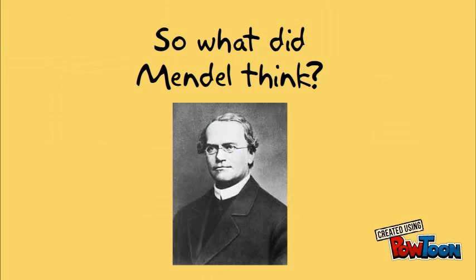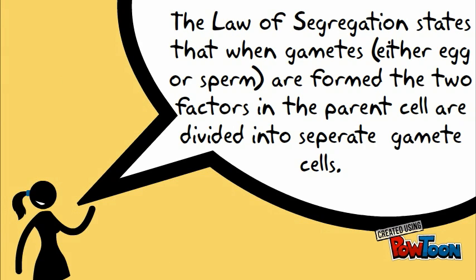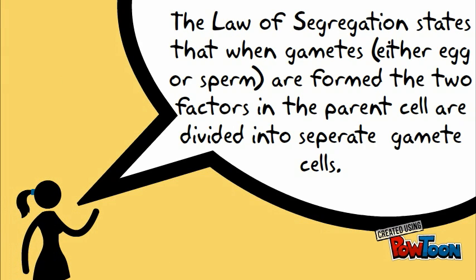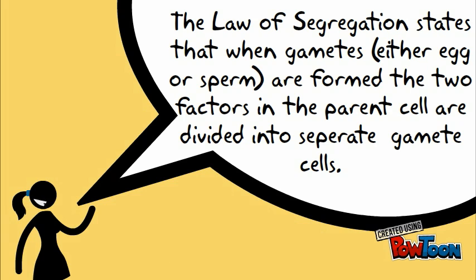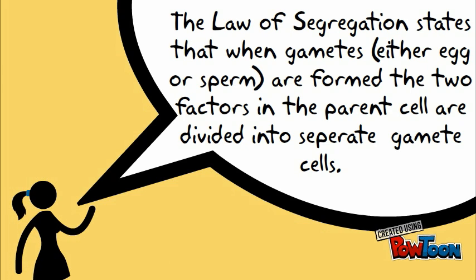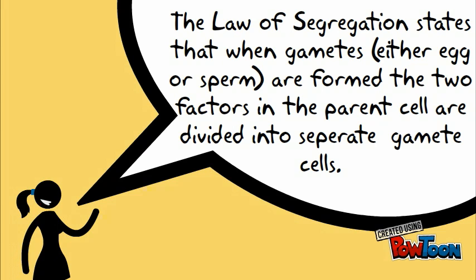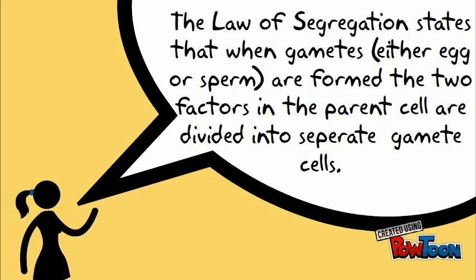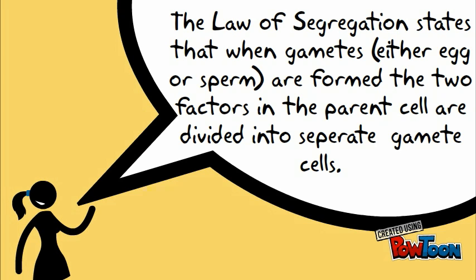Based on these results, what did Mendel think? From these results, he developed his Law of Segregation. Gregor Mendel developed the Law of Segregation while studying the traits of pea plants. After exploring generations of parents and offspring, looking at specific traits, he was surprised to find some common rules, now known as the Laws of Genetics, which govern how all traits are passed from parents to offspring.